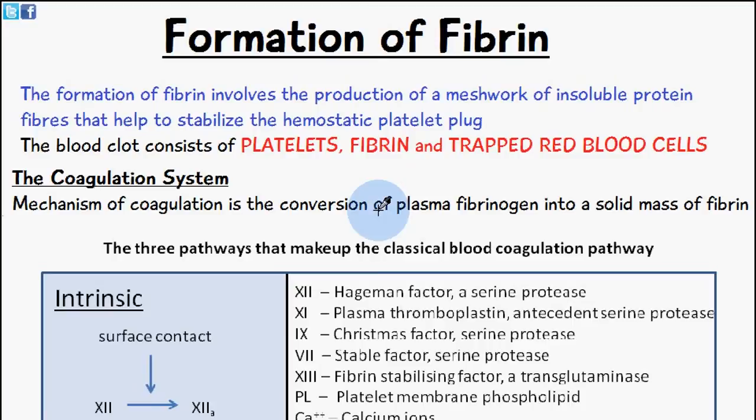We have a system in place known as the coagulation system, and this mechanism of coagulation involves the conversion of plasma fibrinogen into a solid mass of fibrin. That's the whole purpose of this coagulation system — to ensure that we have formation of a solid mass of fibrin to help stabilize the platelet plug so we don't lose any more blood from the vessel.